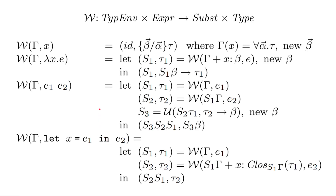Let's start with the variable expression first, since that's the simplest — it's the only one to fit in one line. If you call Algorithm W with a context and some variable expression X, you return a tuple of a substitution and a type. The substitution is ID — the identity substitution, essentially the empty substitution.